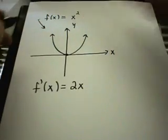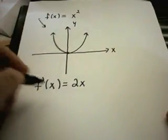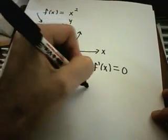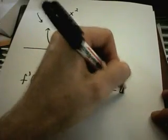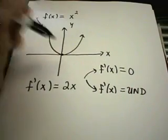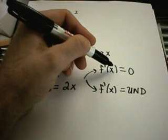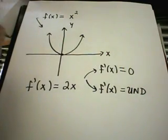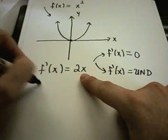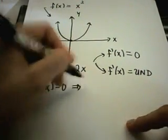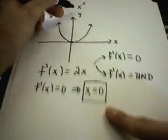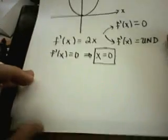So the derivative of x squared is 2x. Once we have the derivative, we want to figure out two things — and this is always true in general. We want to figure out where the derivative equals 0, and where the derivative is undefined. When we find these values, if they are in the domain of the original function, we call those x-coordinates critical numbers. In this case, if I set 2x equal to 0, that gives me x equals 0. There's no place where 2x is undefined, so I've only got one critical number.